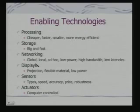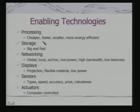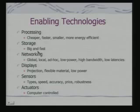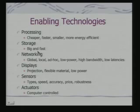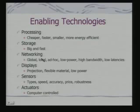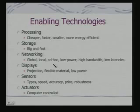So, looking at enabling technologies — all of these we had studied as part of this course. Processing is becoming cheaper, faster, smaller, and more energy efficient. Storage is big and fast because you need to store lots of information; if you want an intelligent environment, you need to know lots of things about it. Networking offers a variety of schemes available — local, ad hoc, low power, high bandwidth, low latencies. Ad hoc networking enables a person moving in with his device into any environment to be networked and connected.